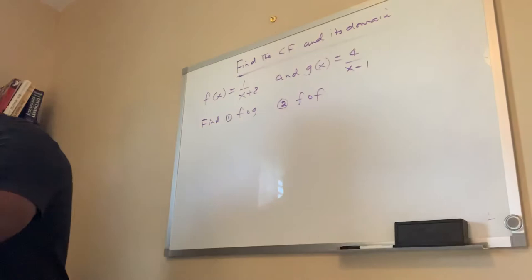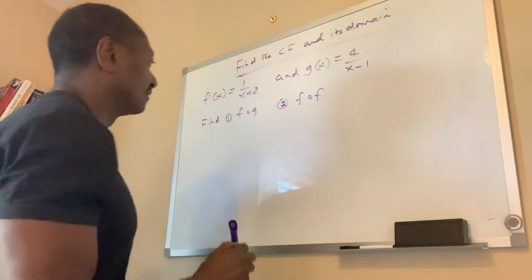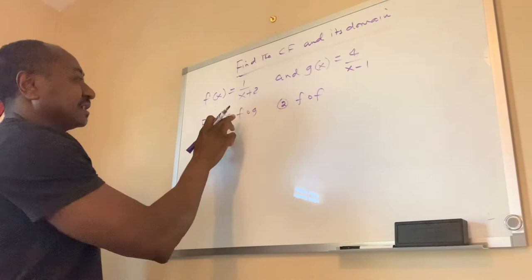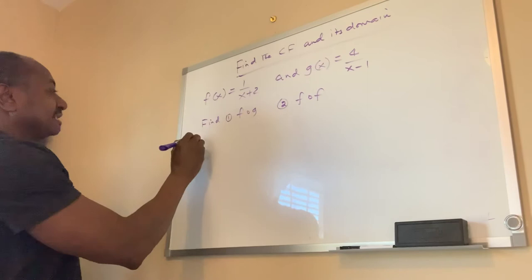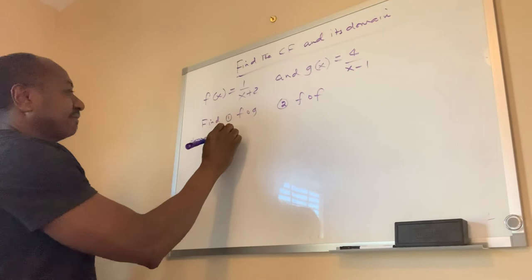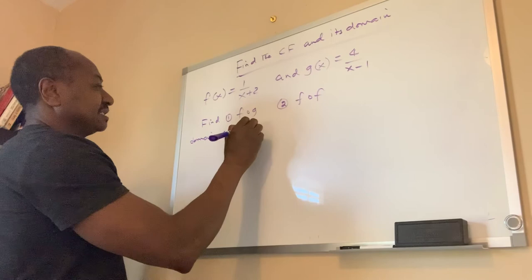Let's look at the solution for part one: finding the composite function f of g. To start, we list the domain of f of x. The domain of f of x is x is not equal to negative 2.